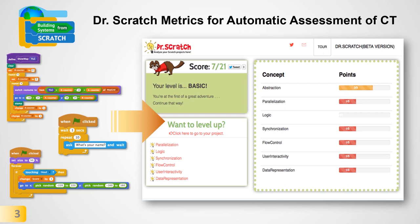Dr. Scratch will score each of these dimensions on a scale from 0 to 3 depending on the computational thinking complexity, which reflects the complexity of the underlying programming practices. For instance, you will get one point in logic for using an if block, or two points for using an if-else block. When you sum up the seven dimensions, you can get a maximum of 21 points in computational thinking.